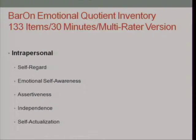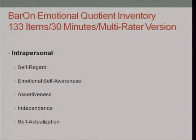Just a couple of words about the Bar-On, which is named for a gentleman by that name — 133 items, takes about a half hour to fill out, and it's a multi-rater 360 version where you get input from other persons who know the individual. It looks at several domains: the intrapersonal domain, including self-regard, emotional self-awareness, assertiveness, independence, and self-actualization.